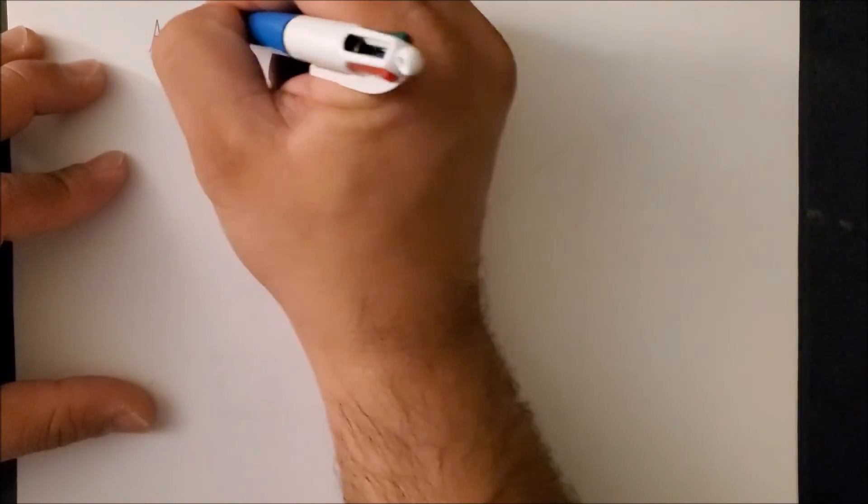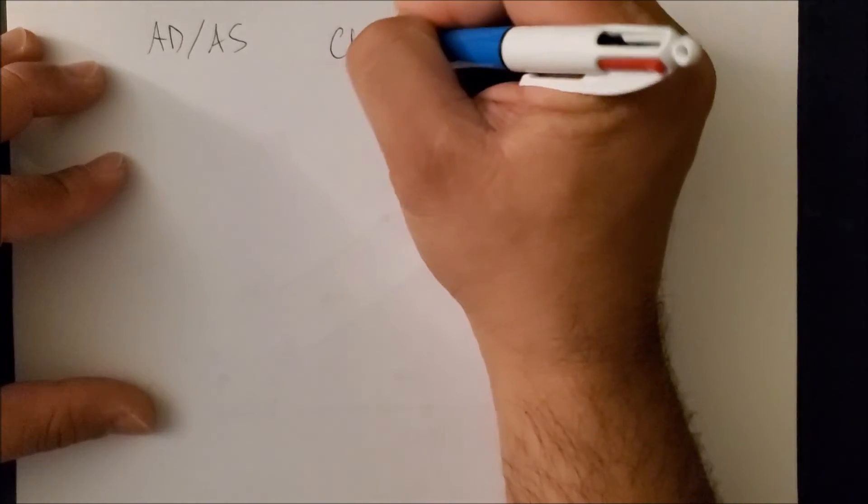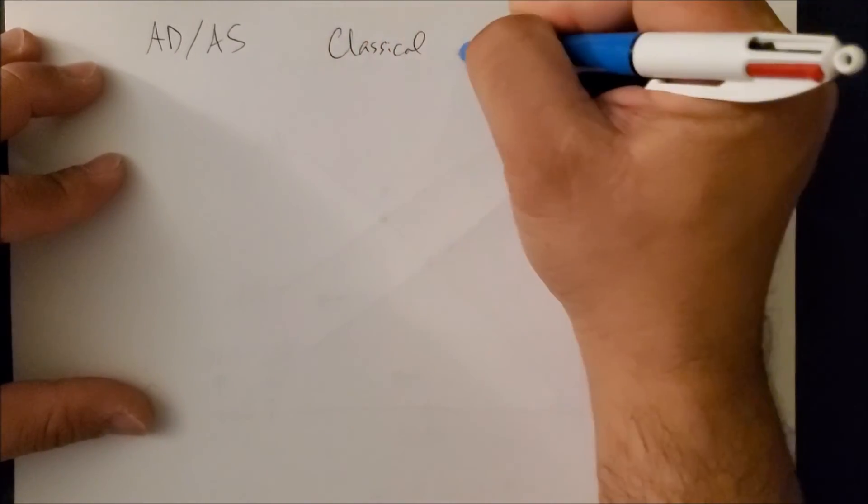But if you are part of the classical economist group, you would say no, there should not be any government intervention. Rather, leave the market alone and have the market readjust on its own. And now we can focus on the classical school of economics.